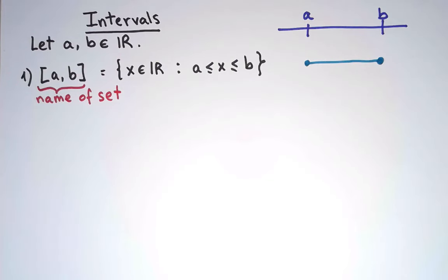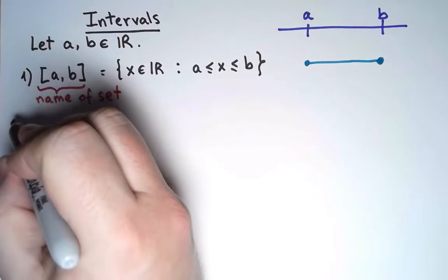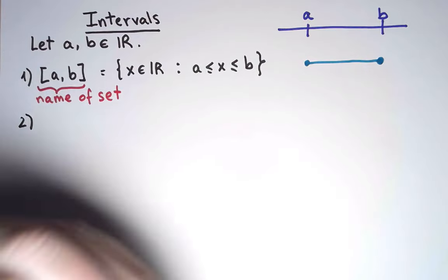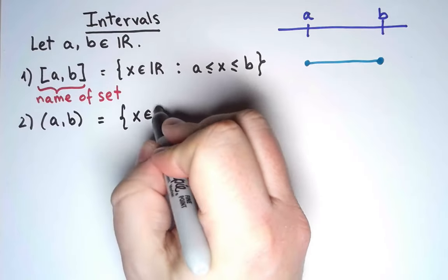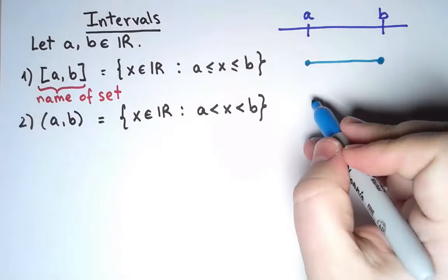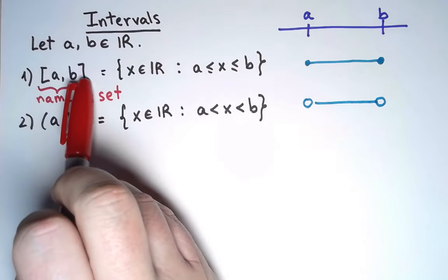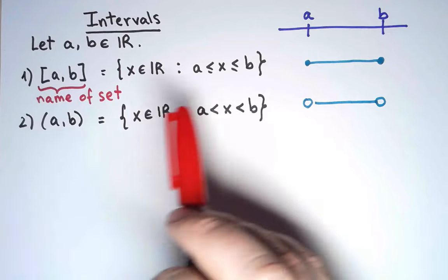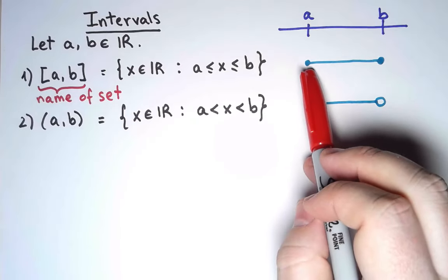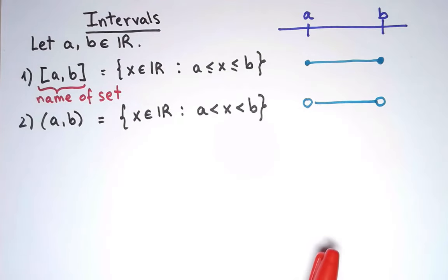I could also construct a similar set that does NOT include the endpoints, and the standard notation for it is as follows. So the name of the set uses square brackets when I include the endpoints, and round brackets when I don't. And geometrically, I fill in the circle when I include it, and leave it empty when I do not.